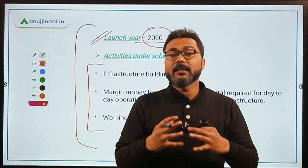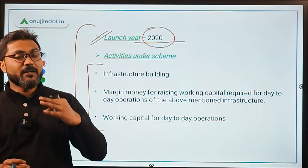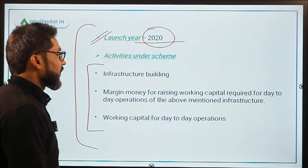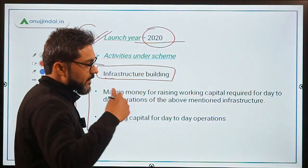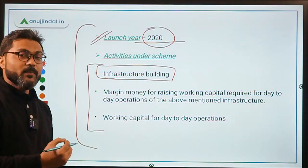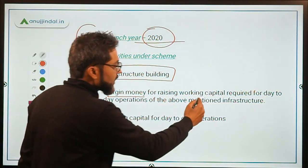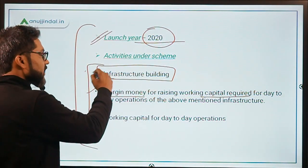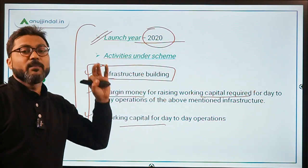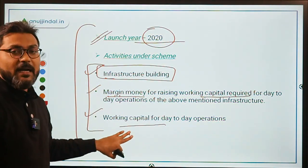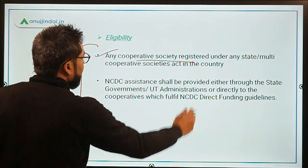The government aims to promote good health by building proper infrastructure through cooperative societies. The activities under the scheme are: first, infrastructure building or renovation of existing infrastructure; second, margin money for raising working capital required for day-to-day operations; and third, working capital required after the infrastructure has been built.